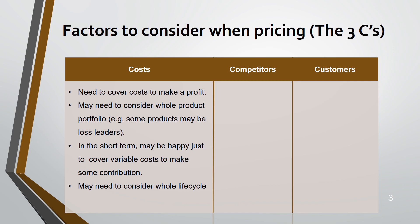Some products are initially very costly. A good example is the IT industry — smartphones, software — initially they're very high-priced. But as the product goes through its life cycle, through growth into the maturity stage, the price starts declining. By that time they've already captured the market, so even if they reduce the price they can still make a profit.